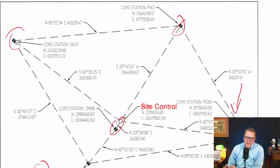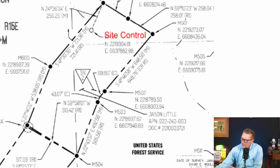This looks really solid. This network was shown on a record of survey and it looks good. However, there is a problem. As I showed you in the previous slide, the surveyor went to the trouble to tie in five core stations and post-process them down to the site control shown here.